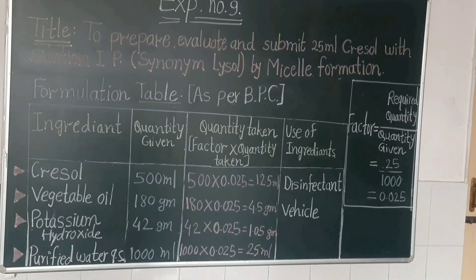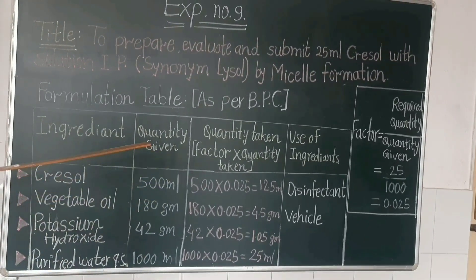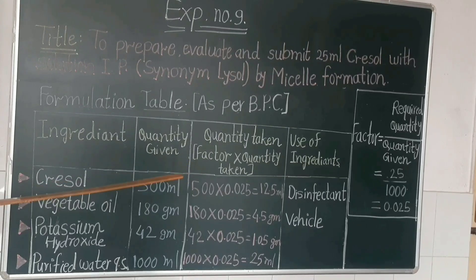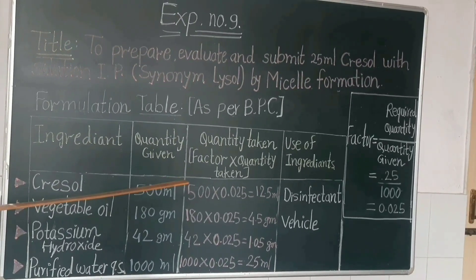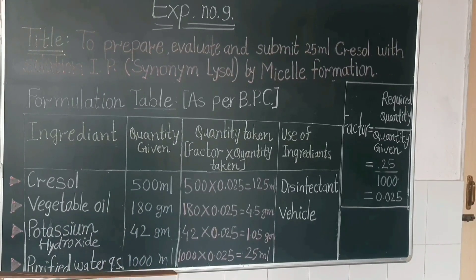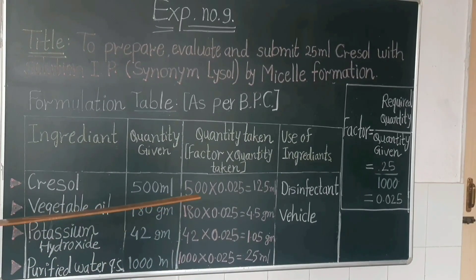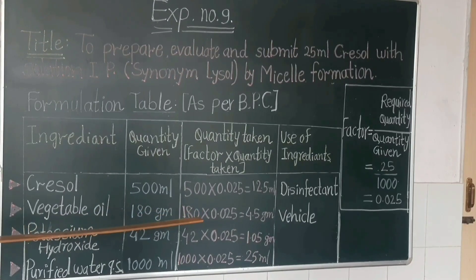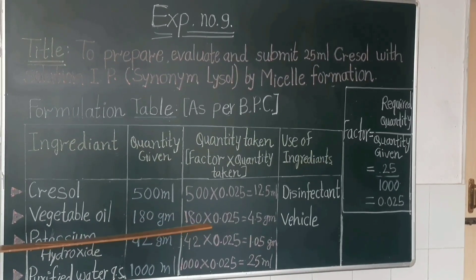Before going to perform the practical, we have to find out the factor. Factor equals required quantity divided by quantity given. Here we have to prepare 25 ml, so 25 divided by 1000. The factor value is 0.025.